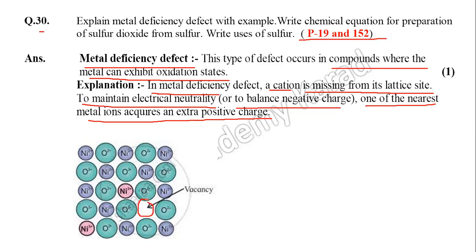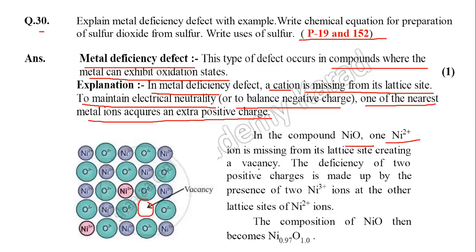To maintain electrical neutrality or to balance the negative charge, one of the nearest metal ions acquires an extra positive charge. In the compound of NiO, one of the Ni²⁺ ions is missing from its lattice site, creating a vacancy. This vacancy creates a deficiency of two positive charges. This is made up by the presence of two Ni³⁺ ions at other lattice sites. So the composition of NiO then becomes different.